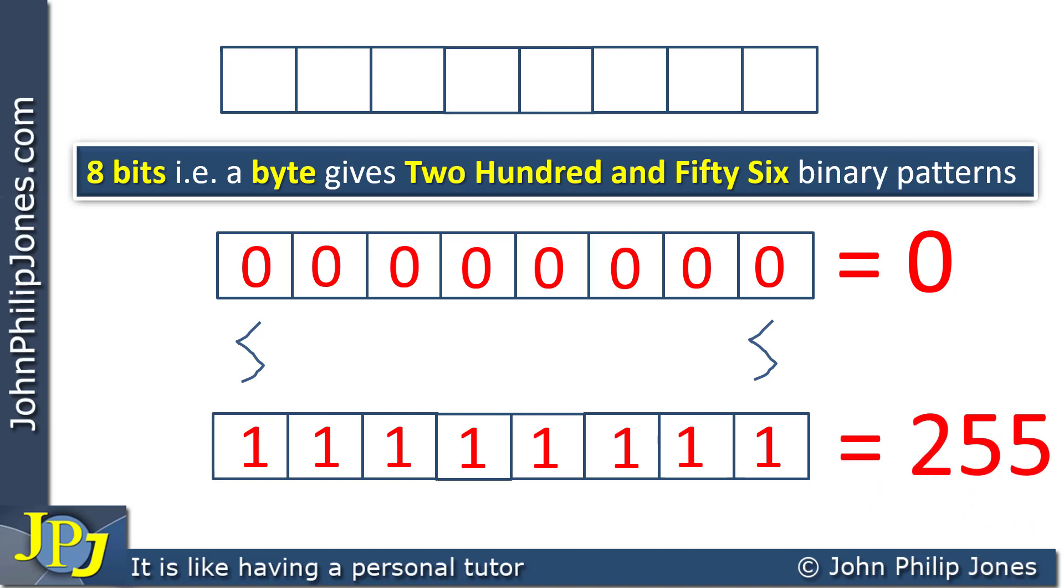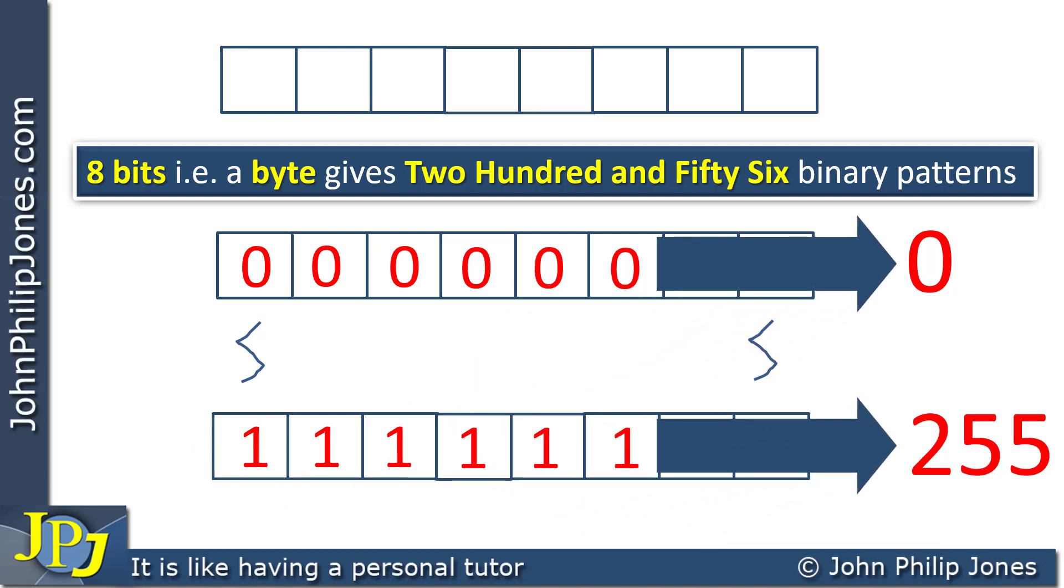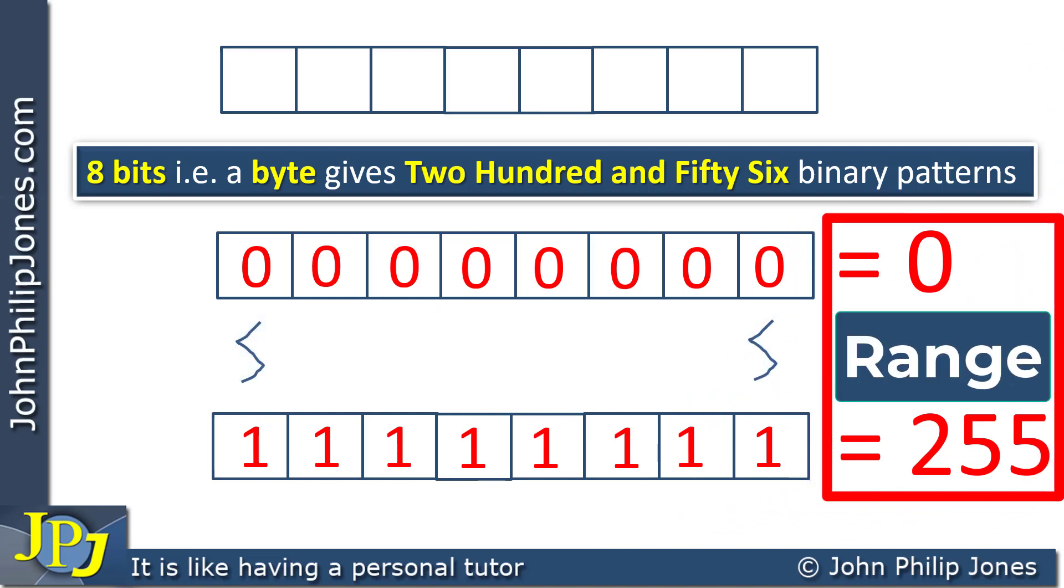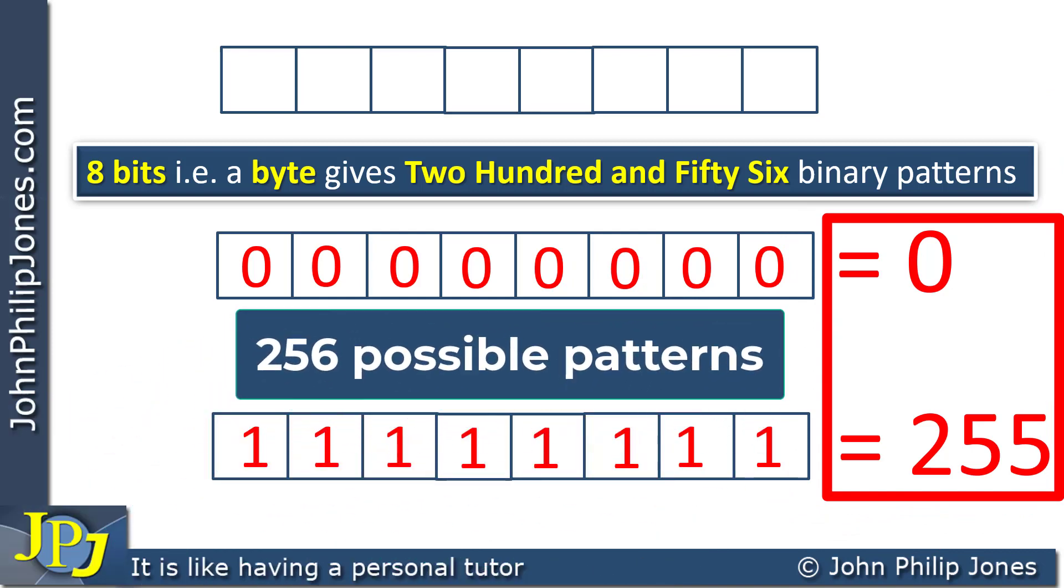Now here you need to bear in mind we go from 0 to 255, and when you include the 0, that means you have 256 possible binary patterns. So it is important to remember what we have got here is a range from 0 to 255 when we have a byte, and that makes 256 binary patterns.